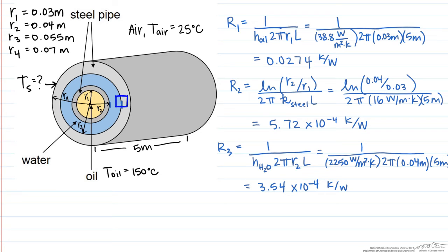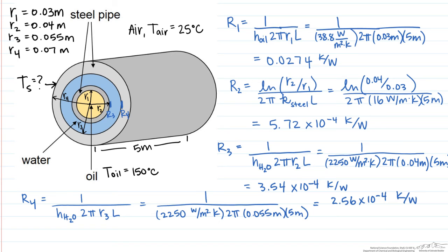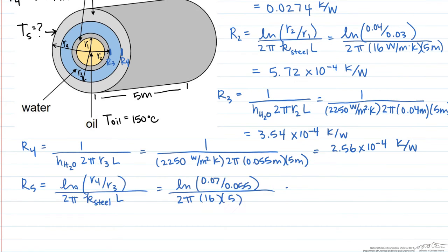The fourth resistance is also a convective resistance — this is the heat transfer caused by the water against the edge of the next steel wall. This is done exactly the same way; the only change is that we have a different radius. We then come to the conductive resistance of the final steel wall. R₅ is going to equal 4.8 times 10 to the minus 4 Kelvin per watt.